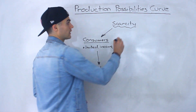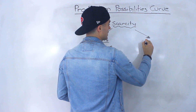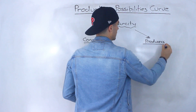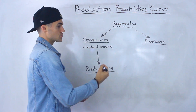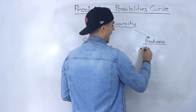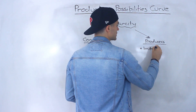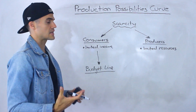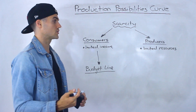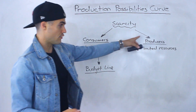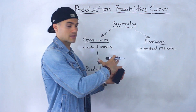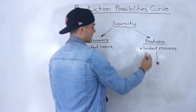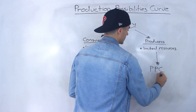Now what we're going to be doing is looking at the scarcity that producers face. Producers face scarcity because they have limited resources, so there's only so many resources they can use to produce goods and services. These trade-offs that producers face — the opportunity costs — are going to be visually represented through this production possibilities curve.